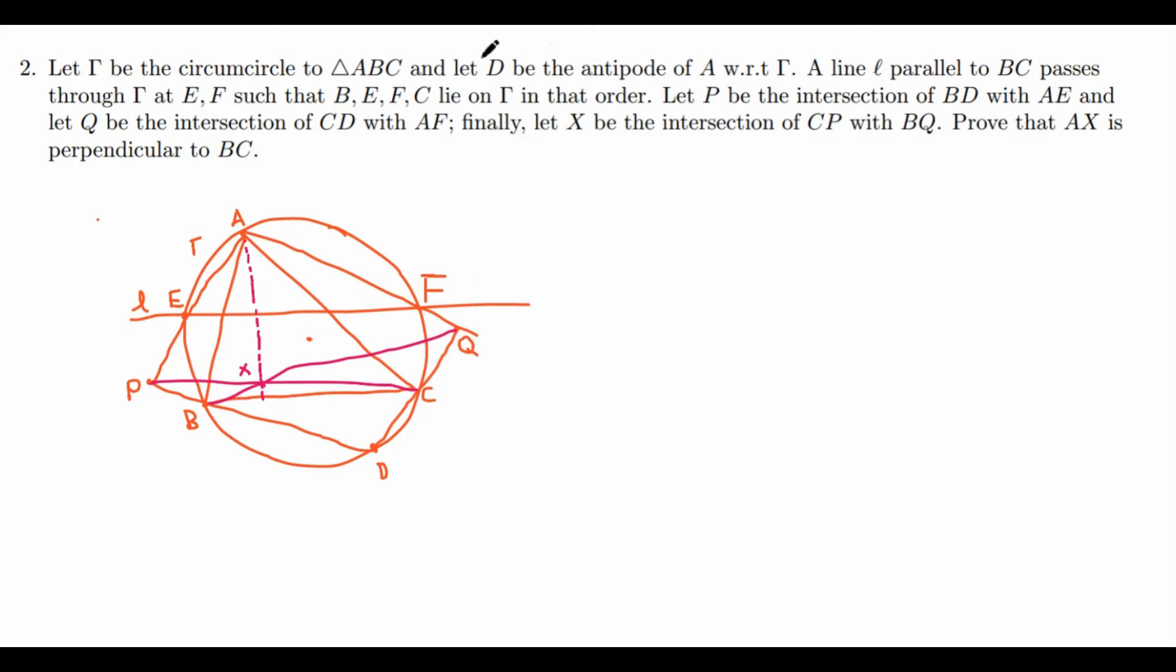So first of all, let's look at what D is. D is the antipode of A, so the diametrically opposite point. And what do we know about angles that subtend half of a circle? For example, in this arc A, C, D, this angle subtends exactly half the circle. So what does that tell us? Well, that tells us angle ACD equals 90 degrees. And this is just basic circle properties.